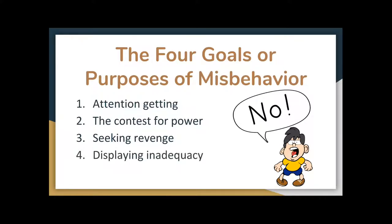The fourth goal is displaying inadequacy. The student feels they don't measure up, and to mask that area where they feel insufficient, they try to overdo things in other areas. Based on this, Dreikurs suggested that teachers must understand that all student behavior stems from these social needs. Though we don't excuse misbehavior, we can realize it's often rooted much deeper than just a student wanting to act up.